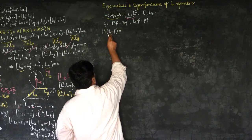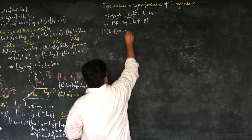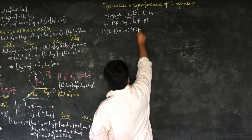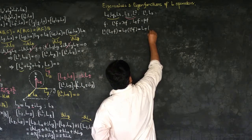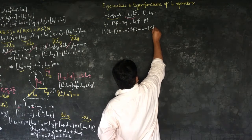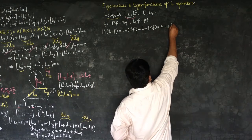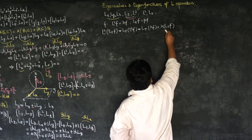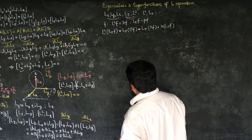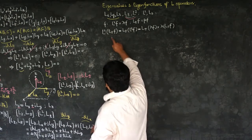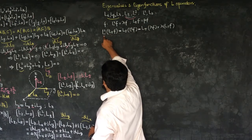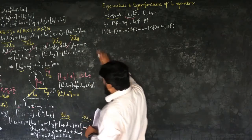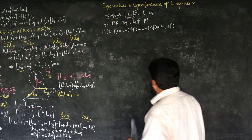Let me apply L² on L±F, where F is an eigenfunction of L². Since L² and L± commute, I can change their order: L² on L±F equals L± on L²F. Since L²F equals λF, this gives λ times L±F. So L±F started as the argument and ended as λ times L±F — meaning L±F is also an eigenfunction of L² with the same eigenvalue λ.